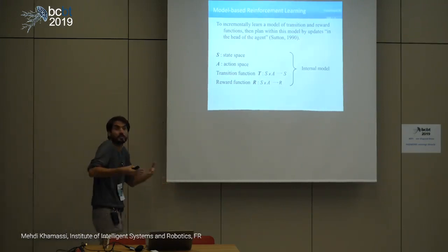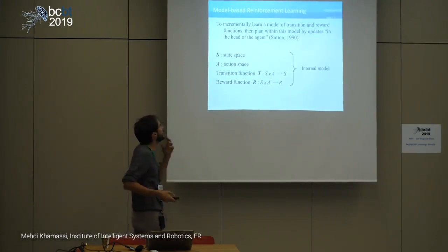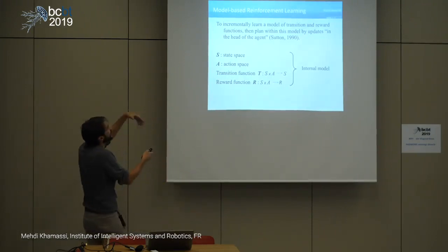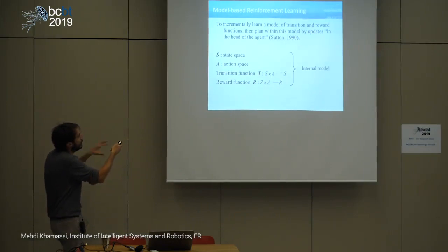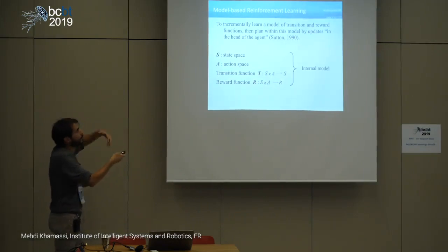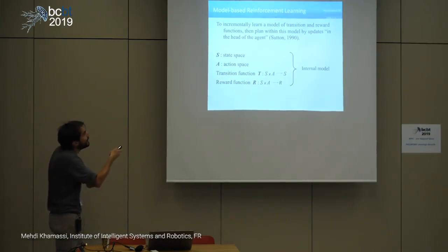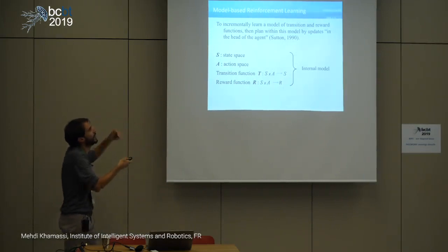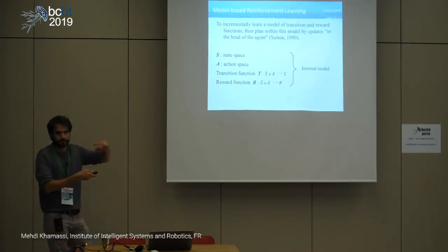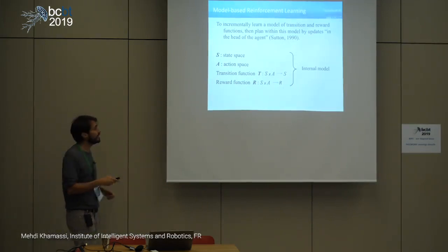Using this model — as Sutton describes — you first incrementally learn the transition and reward functions, and then you can plan within this model through updates inside the head of the agent.